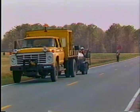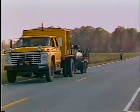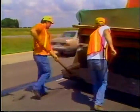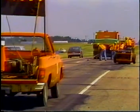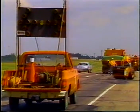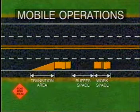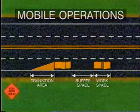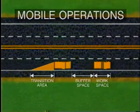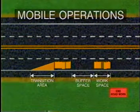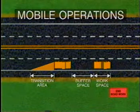In mobile operations, the advanced warning area may be provided by signs and flashing lights on the work vehicle. Additional advanced warning signs may be warranted depending on the volume and speed of the traffic. A shadow vehicle equipped with an arrow display and flashing lights may also be used. With mobile operations, the transition area actually moves with the activity area, and the buffer space is the area between the shadow vehicle, if one is used, and the work crew. The termination area is usually obvious to the driver passing the work vehicle. The use of a truck-mounted attenuator should be considered for mobile operations.